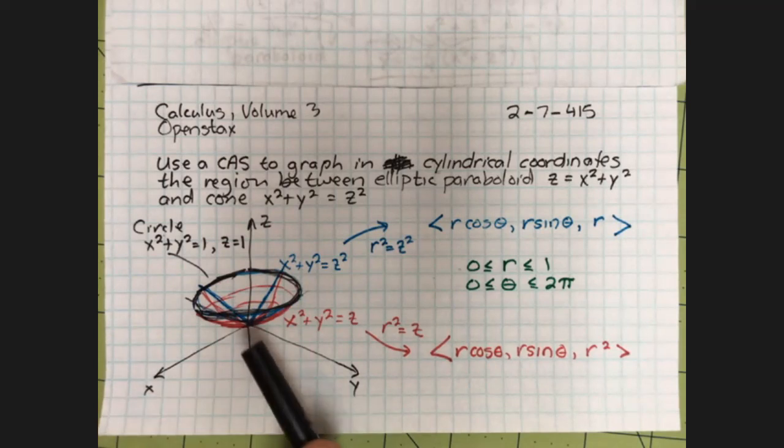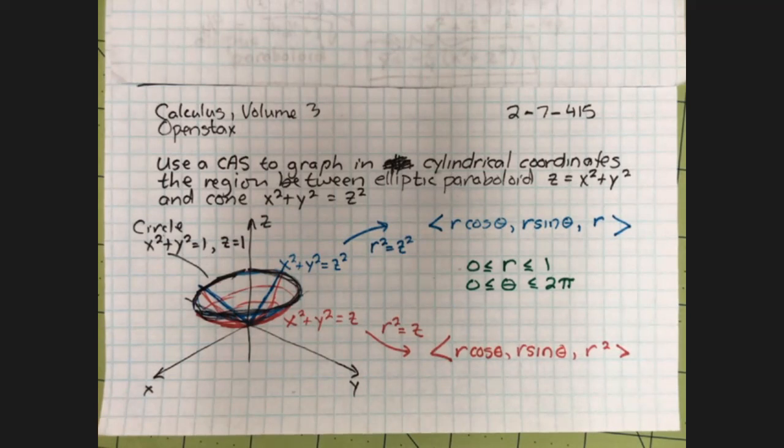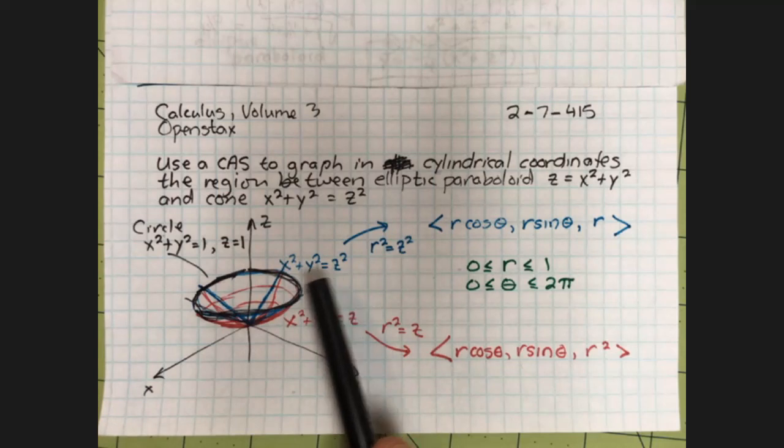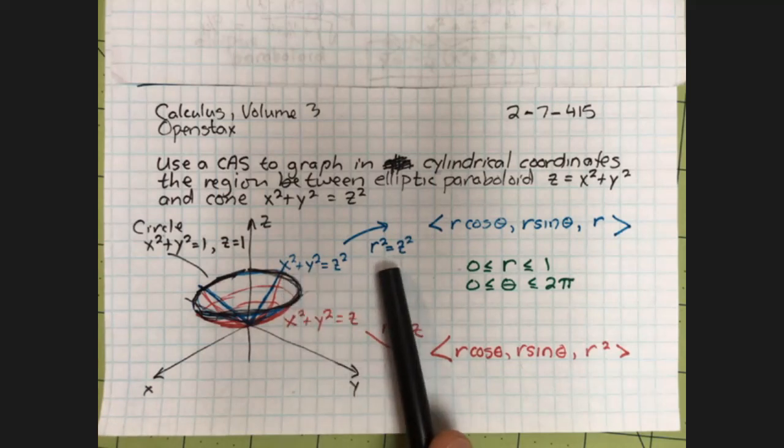But the only region that's going to be trapped between this cone and this bowl is the region above the x, y plane. So that's what we've drawn here. x squared plus y squared equals z squared. That's r squared equals z squared in cylindrical coordinates.